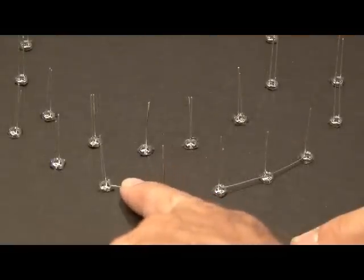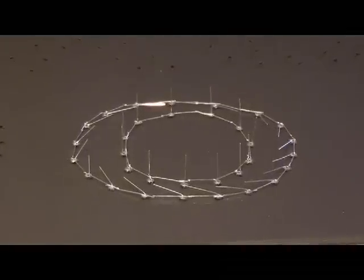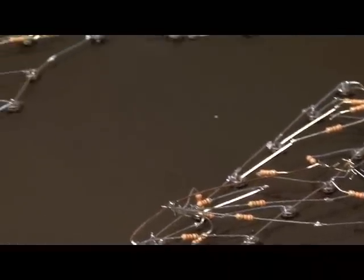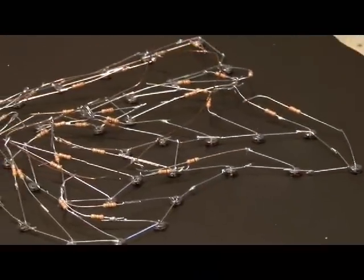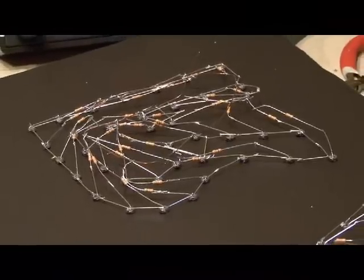Now this is probably the most time consuming part of the project as each negative connection of the LEDs need to be connected together. And then a 330 ohm resistor needs to be attached to each positive end of the LEDs. Then all those positive ends of the LEDs need to be connected together.